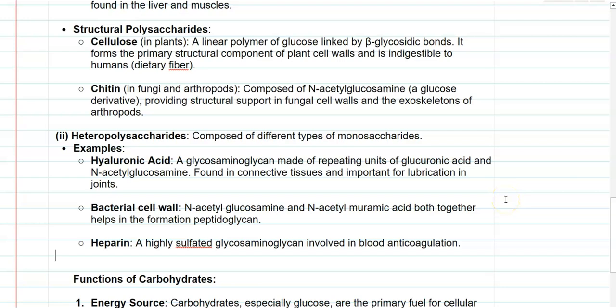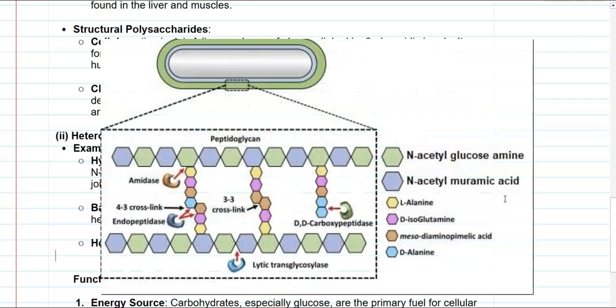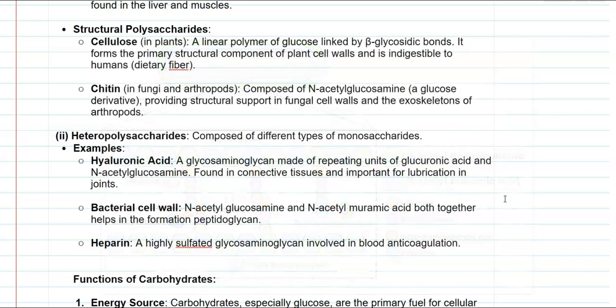The next type is heteropolysaccharides, which are composed of two different types of monosaccharides bonded together. A classical example is hyaluronic acid, a glycosaminoglycan made up of repeating units of glucuronic acid and N-acetylglucosamine. This polysaccharide is present in connective tissues and plays a very important role in the lubrication of joints. The next example is the bacterial cell wall, technically referred to as peptidoglycan, which contains two different monosaccharides: N-acetylglucosamine and N-acetylmuramic acid, grouped together to form the bacterial cell wall.